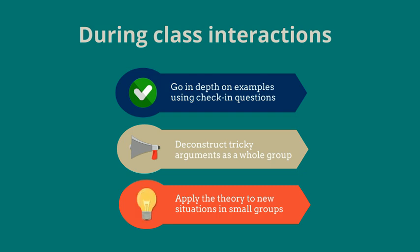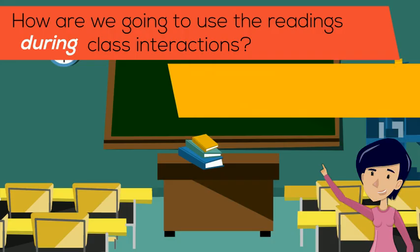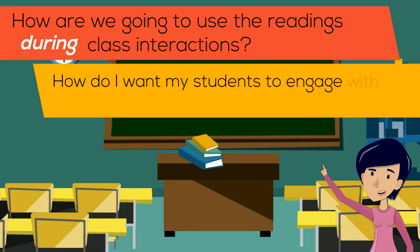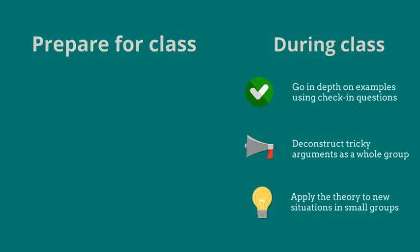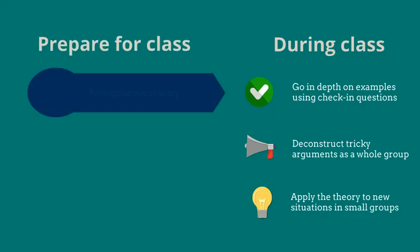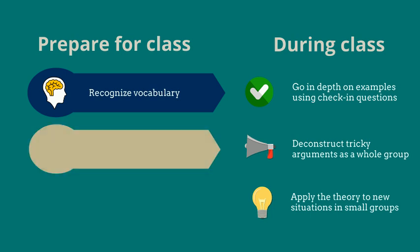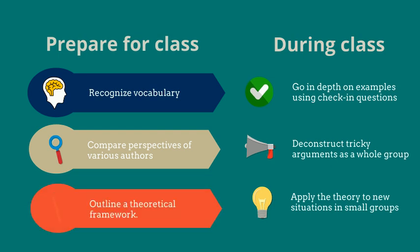By making my teaching strategies apparent, I can answer question 2: How do I want my students to engage with the reading to prepare for class interactions? Do I want them to recognize the meanings of new vocabulary so I don't have to review it before I delve into the examples? Or compare perspectives from various authors so we can get right into deconstructing tricky arguments? Or outline a theoretical framework so they can try solving problems with it in small groups?